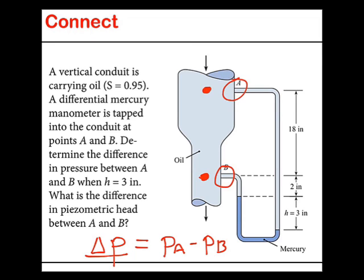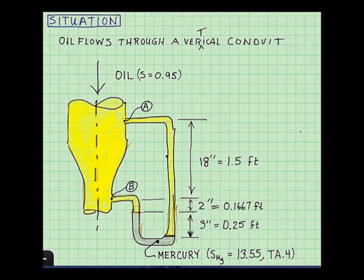To document the situation, notice that I used two colors. Yellow to distinguish the oil and gray to distinguish the mercury. Notice that I put down dimensions and converted these to feet because these are consistent units, and this makes my calculations easier. Lastly, I looked up the specific gravity of mercury. And I found this value in table A.4 in the front of the book.